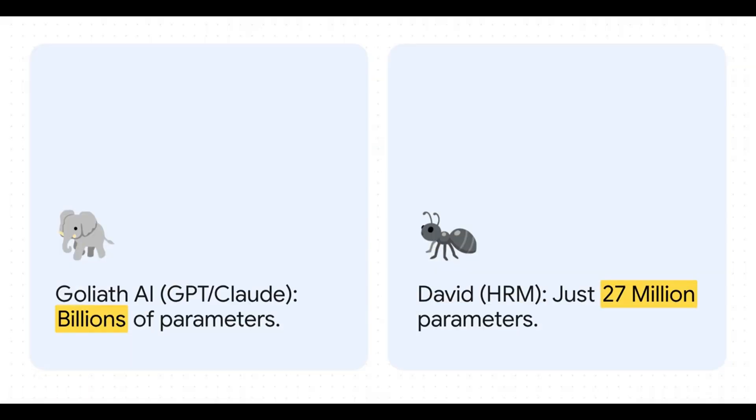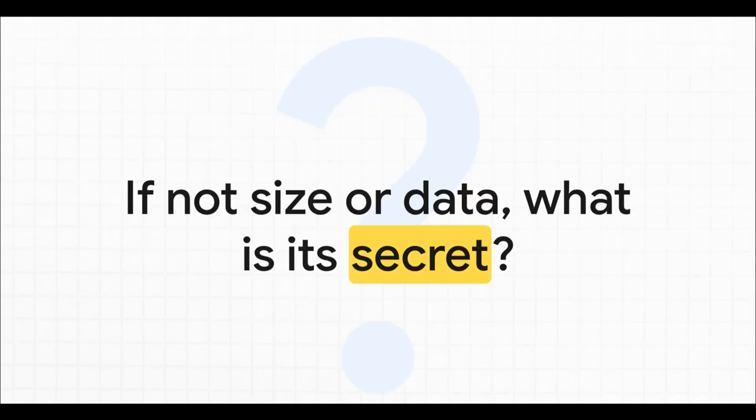Let's put this into perspective. On one side, you've got the Goliaths, your GPTs, your Clods with hundreds of millions, sometimes billions of parameters. And then on the other side, you have this little David HRM with just 27 million parameters. That is less than a quarter of the size of the original GPT-1 from back in the day. And yet, it's beating modern, state-of-the-art models.